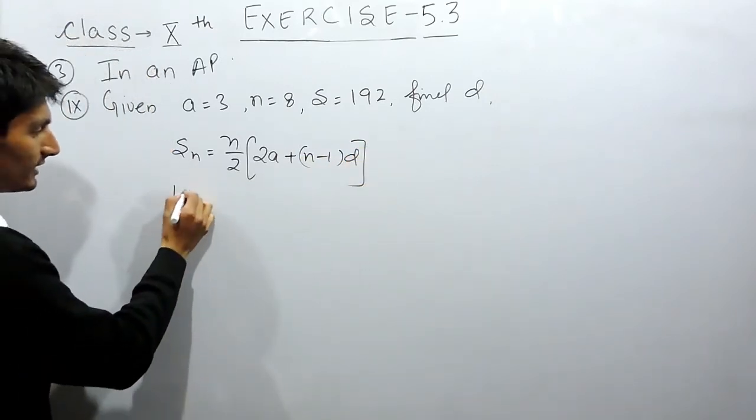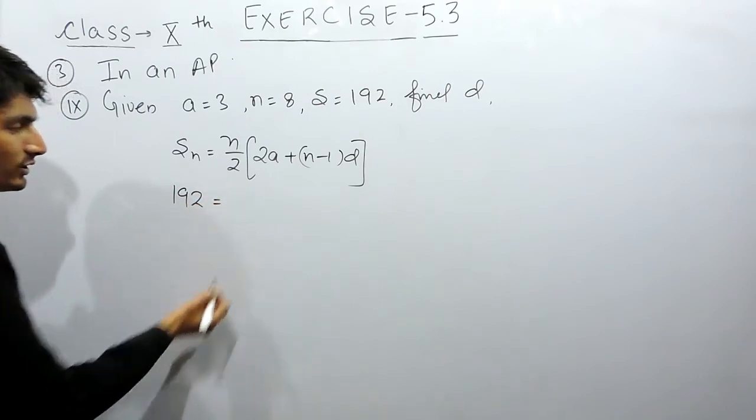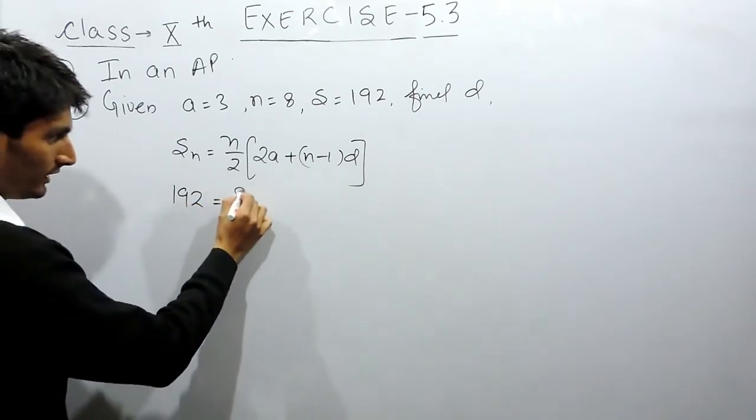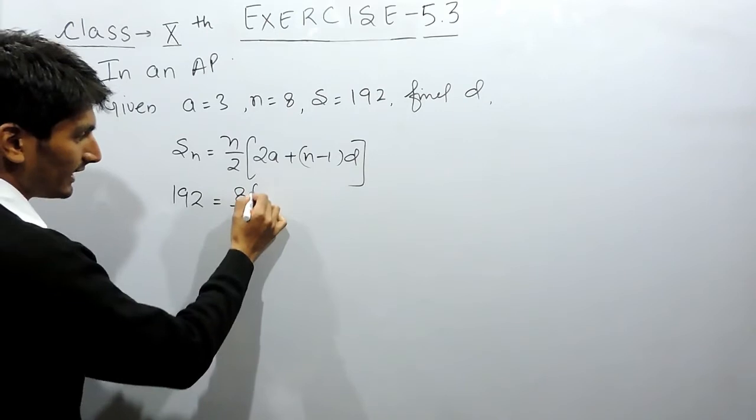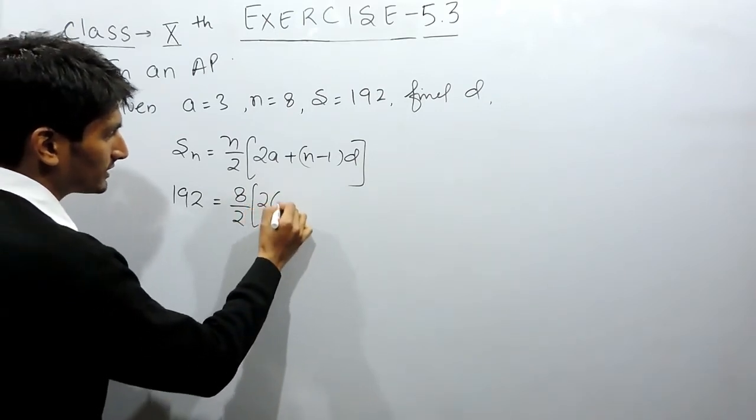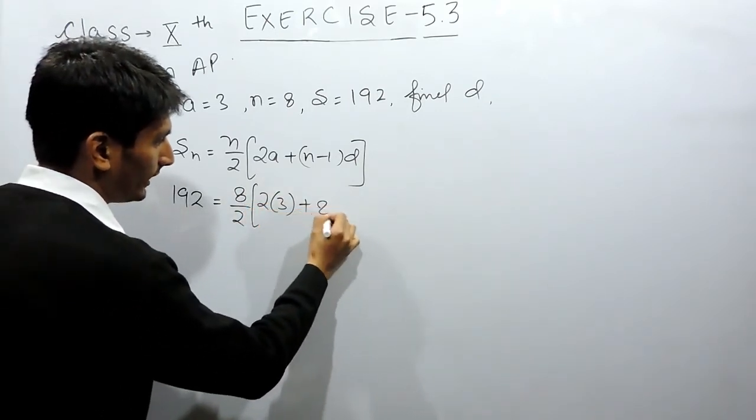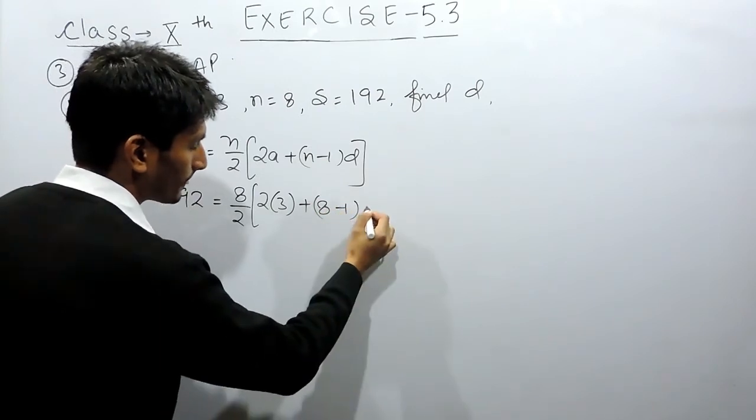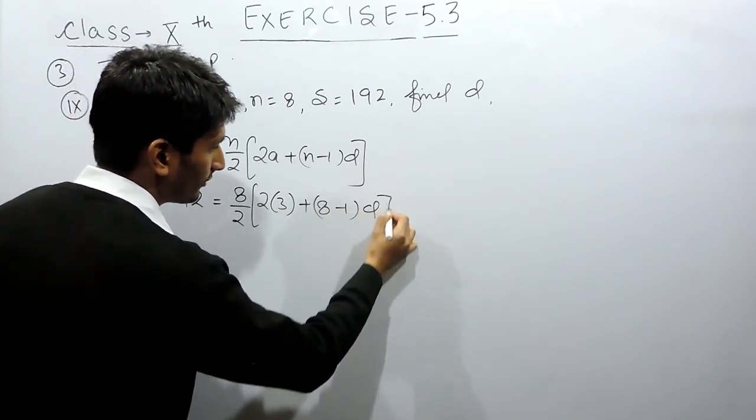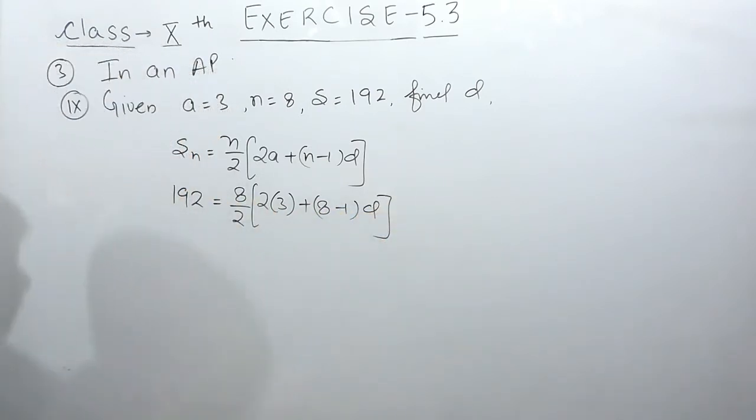The sum of n terms is given to you at 192, and there are 8 terms in this AP. The first term is given to you. Now 8 terms are there and the common difference you have to find out. So I have substituted all the values in this equation or you can say in this formula.